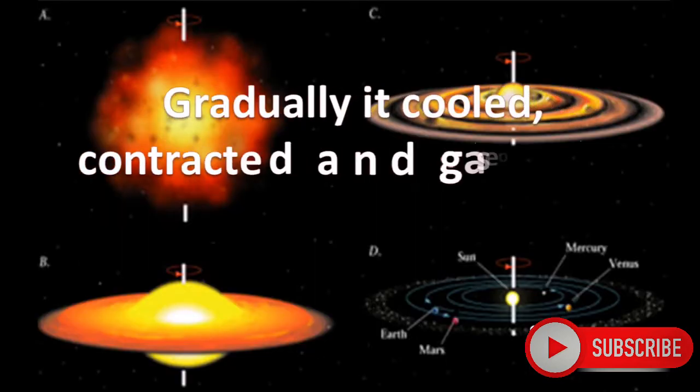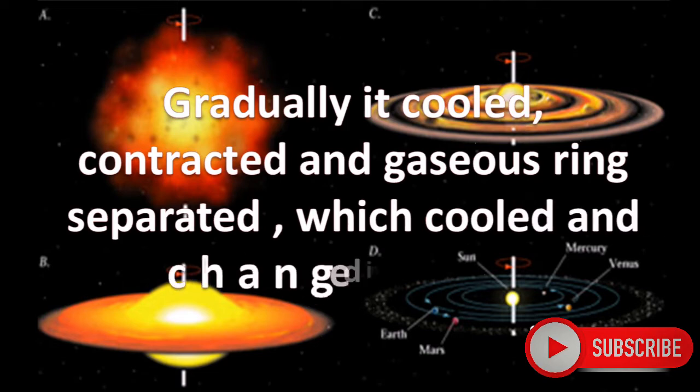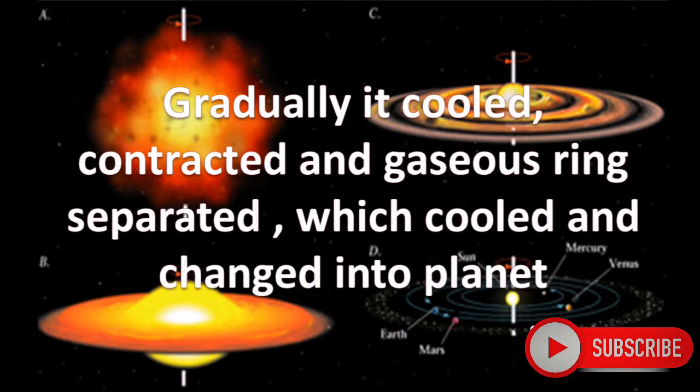Gradually it cooled, contracted, and gaseous rings separated, which cooled and changed into planets.